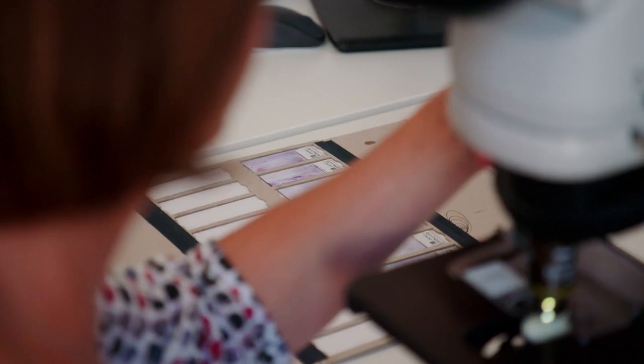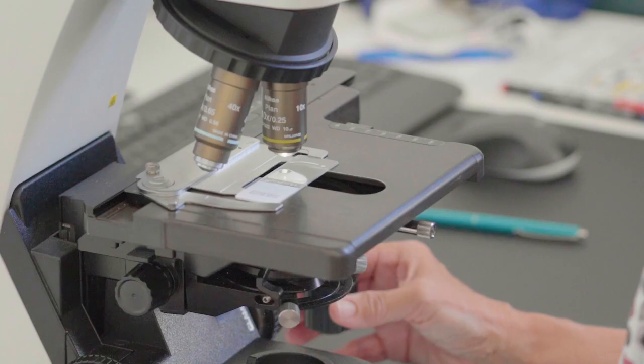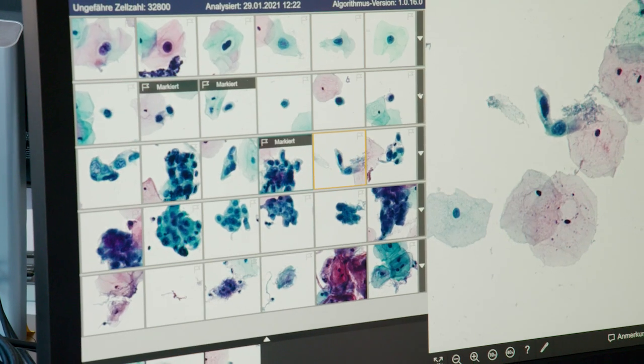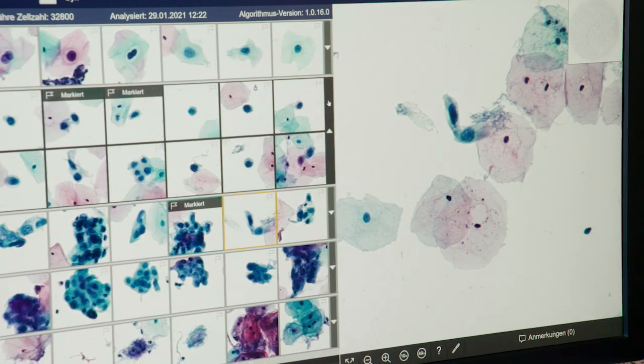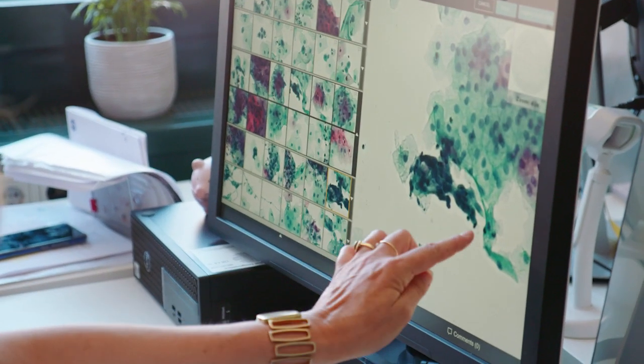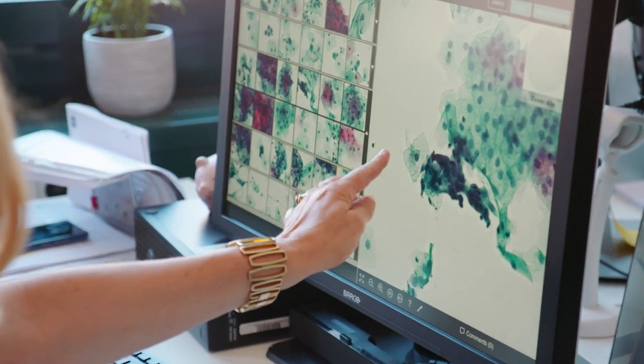With the old system, I put the Pap smear under the microscope. I spent a few minutes for one slide, and now I have much more time. It's much easier for me as a cytotechnician. I have a gallery of images, and I can find abnormal cells much faster. I would never go back to the old way we worked.